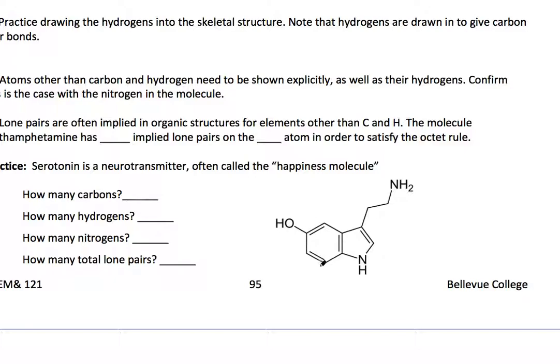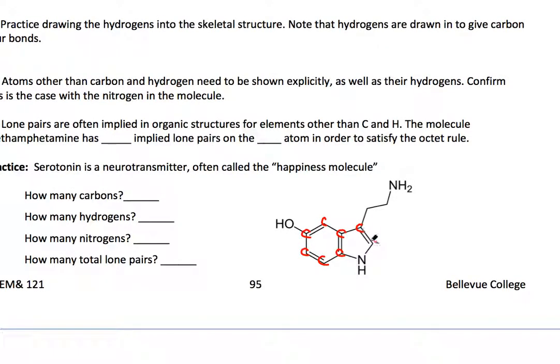and serotonin here, you can draw in or try to visualize all those carbons. Here's a carbon, two, three, four, five, six, seven, eight, nine, ten. So ten carbons, but if you're not seeing it, go ahead and just write it in there. Carbon, carbon, carbon, carbon, carbon. Everywhere those lines meet, a carbon is implied.